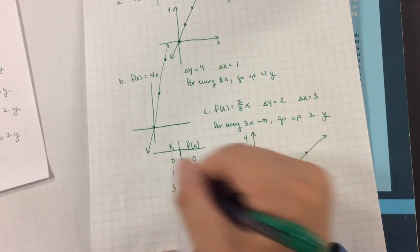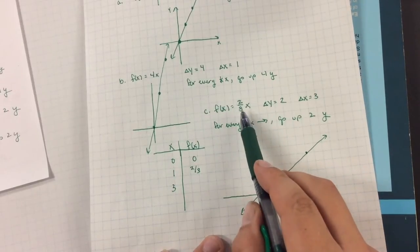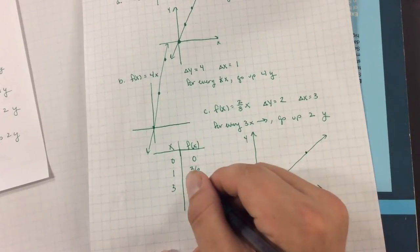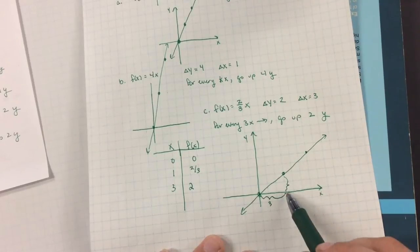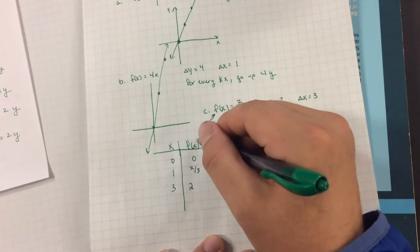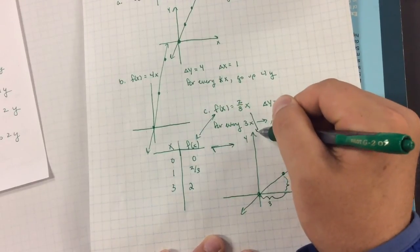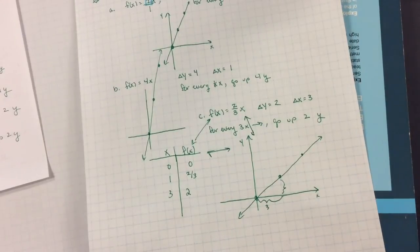Let's type in 3. If I type in 3, what do I get? 3 times 2 is 6. 6 divided by 3 is 2. Do I have the point of 3, 2? I sure do. So right here, we have this connection between graph, table, and equation.